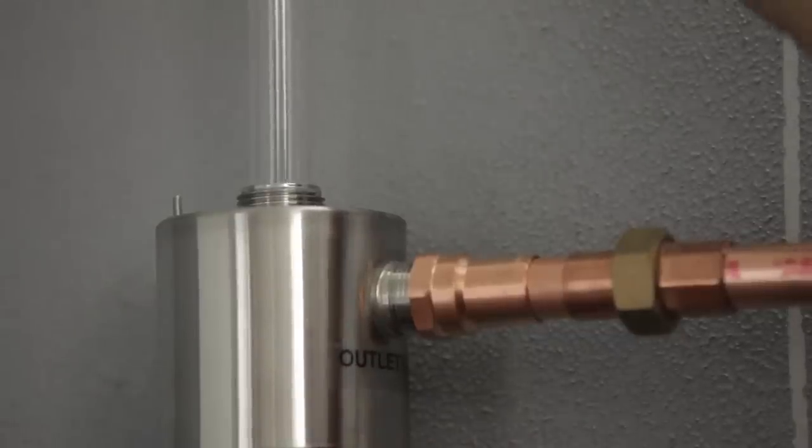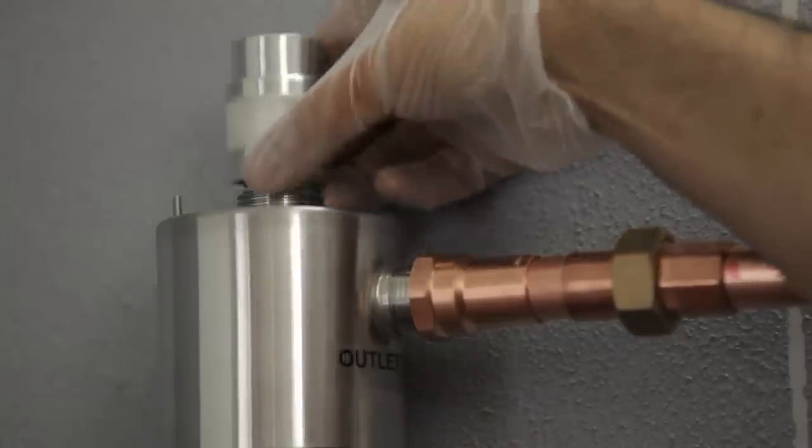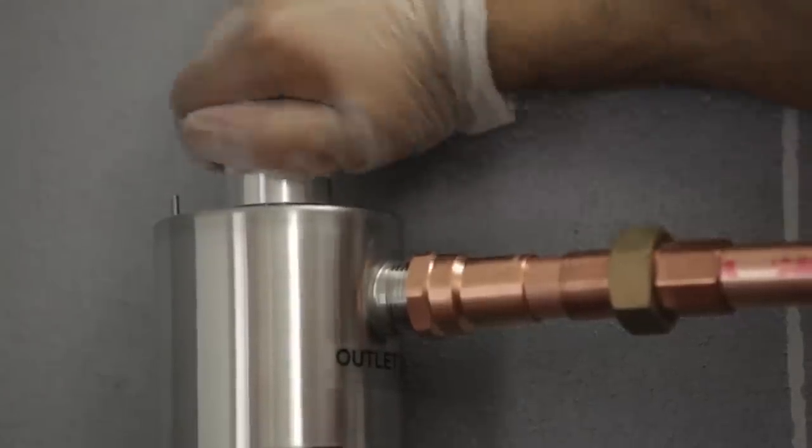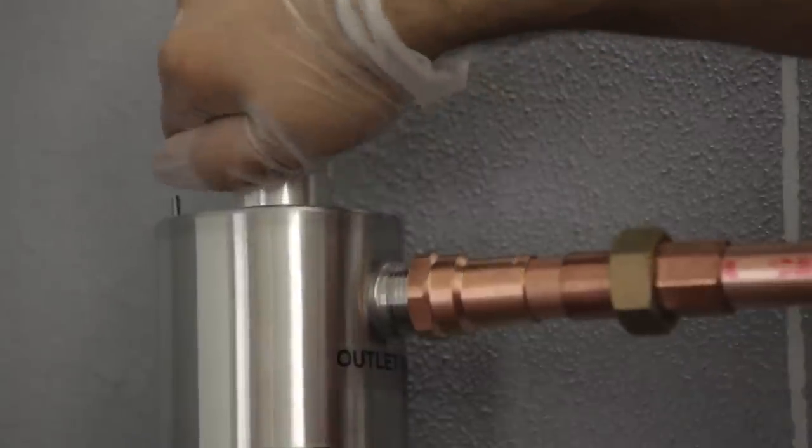Carefully slide the quartz dome with gland nut attached into the opening at the top of the UV chamber, and hand-tighten the gland nut into place. Do not over-tighten the gland nut, as it can break the quartz dome.